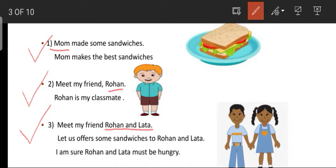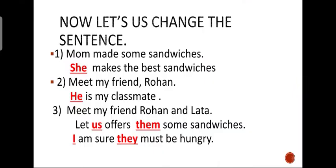Now let us write these sentences again in a better way. So let us read these sentences again. The first one is: Mom made some sandwiches. She makes the best sandwiches. Second example: Meet my friend Rohan. He is my classmate. The third example: Meet my friend Rohan and Lata. Let us offer them some sandwiches. I am sure they must be hungry.